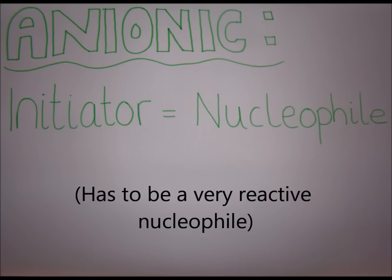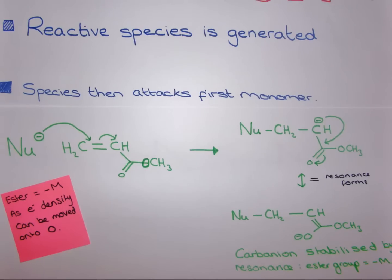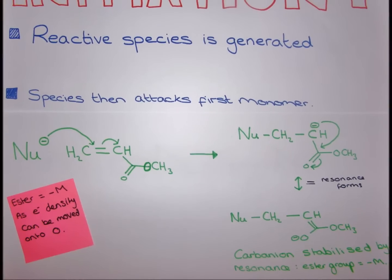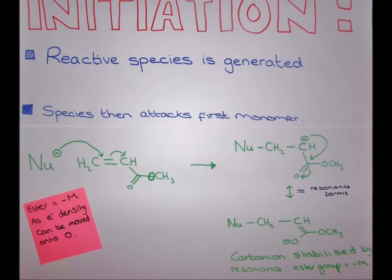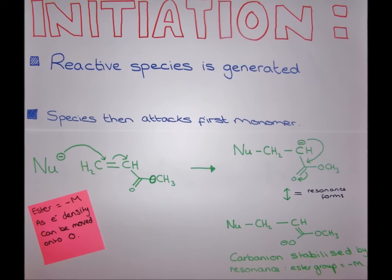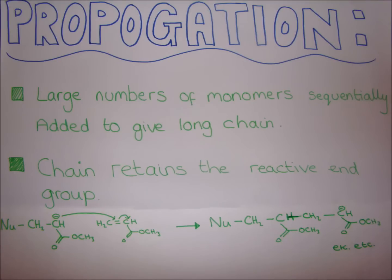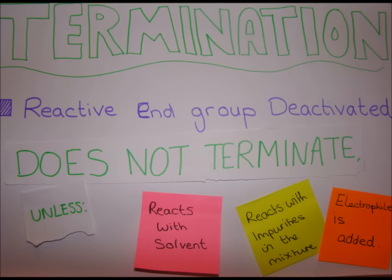In anionic polymerisation, a nucleophile adds to the double bond. This can only occur if a strong electron withdrawing group is attached to the double bond. Propagation then occurs in the same way as before. For this type of reaction, the chain does not terminate — it just stops growing when the monomer has all been consumed.